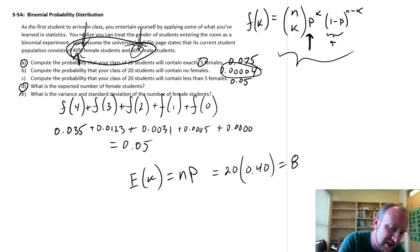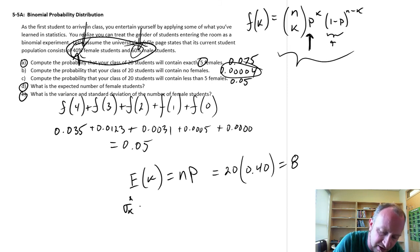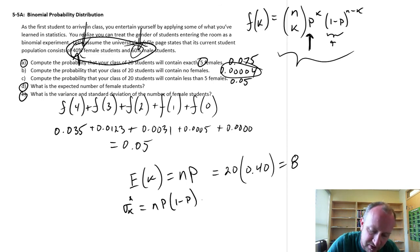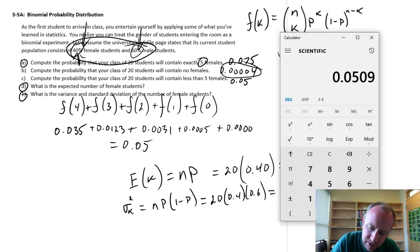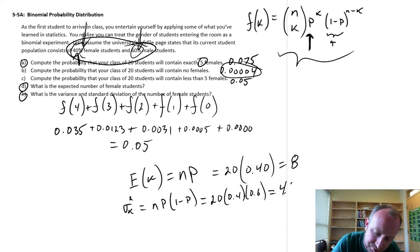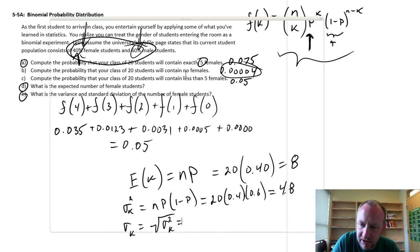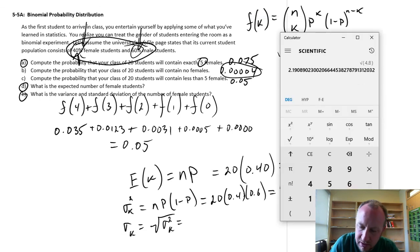What is the variance and standard deviation for the number of female students? The variance equals the number of trials times the probability of success times the probability of failure. So here I have 20 times 0.4 times 0.6, which gives us 4.8. And finally the standard deviation is just the square root of the variance: square root of 4.8 is 2.19.